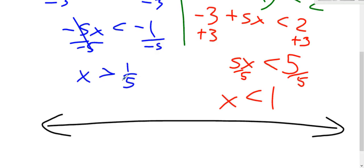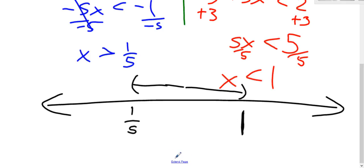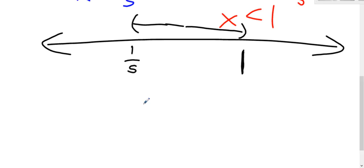So put them in order. One-fifth is smaller, so it goes more to the left than 1. So they both are just greater than and less than, so that means parentheses, and the arrow's pointing to the right because the inequality's pointing to the right. So parentheses at one-fifth to the right, parentheses at 1 to the left, which means it's everything between one-fifth and 1 with parentheses on those numbers.